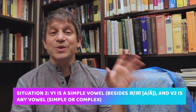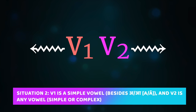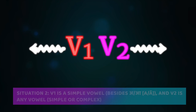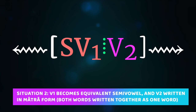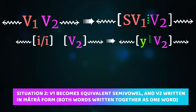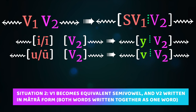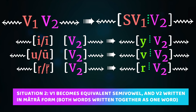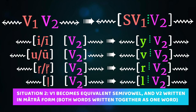The second situation of vowel sandhi is when V1 is a simple vowel other than a or ā, and V2 is any other vowel — simple or complex. In that case, the simple vowel turns into its semivowel equivalent: long and short i becomes ya, long and short u becomes va, long and short vocalic ṛ becomes ra, and vocalic ḷ becomes la. V2 then gets attached to that semivowel, and the two are written together in Devanagari as if they were one word.